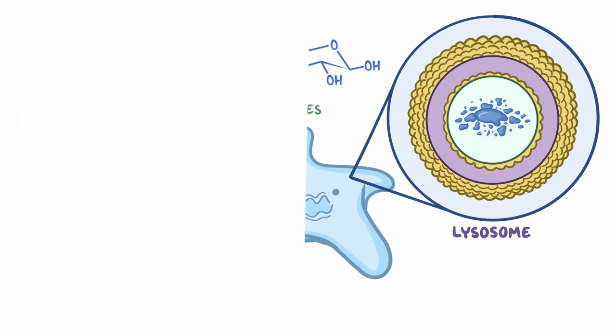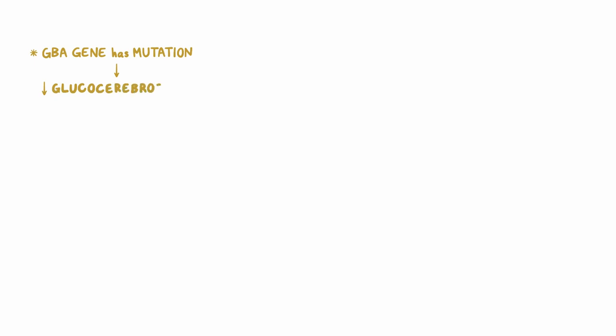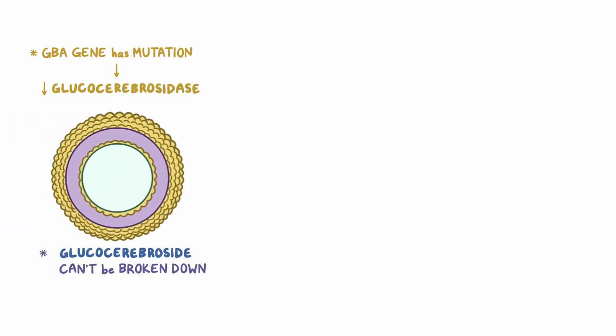In Gaucher disease, the GBA is faulty, meaning it has a mutation that leads to a reduction in the level or activity of glucocerebrosidase. Hence, glucocerebroside can't be broken down and it accumulates inside the lysosomes of macrophages. So, under a microscope, macrophages have a characteristic lipid-laden or fatty appearance, similar to crumpled tissue paper.